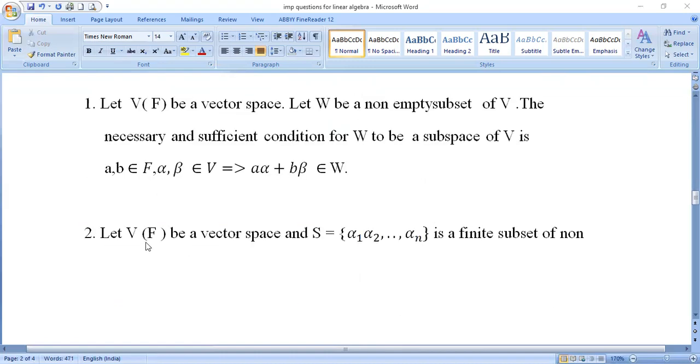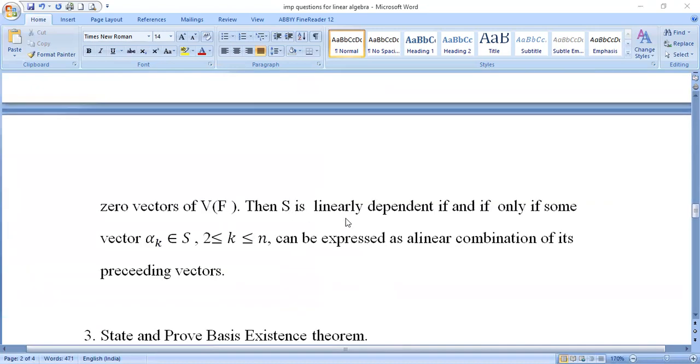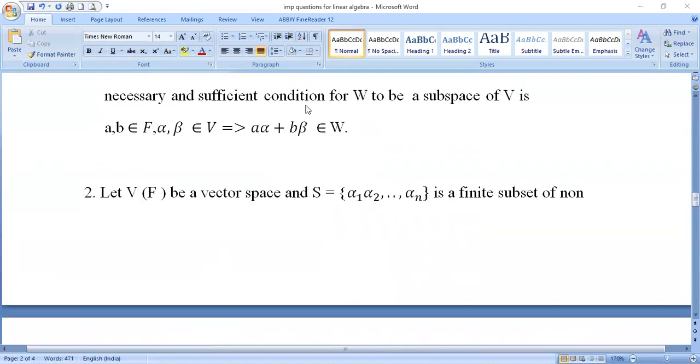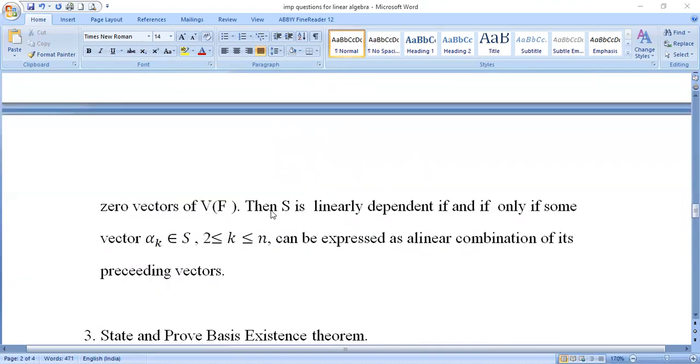Second essay question: Let V(F) be a vector space and S = {α₁, α₂, ..., αₙ} be a finite subset of non-zero vectors of V(F). Then S is linearly dependent if and only if some vector αₖ (where 2 ≤ k ≤ n) can be expressed as a linear combination of its preceding vectors. This is also a very important question. In the first chapter, this is the first question, and in that chapter it's the last theorem.